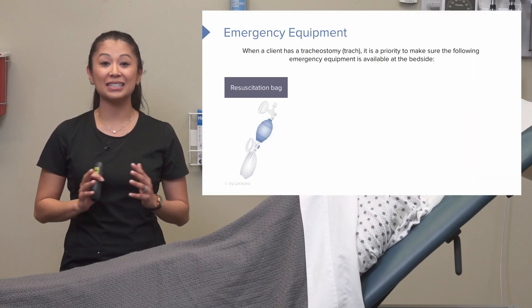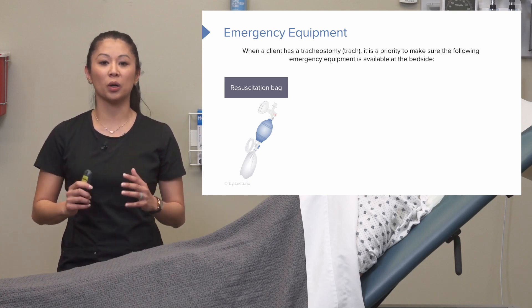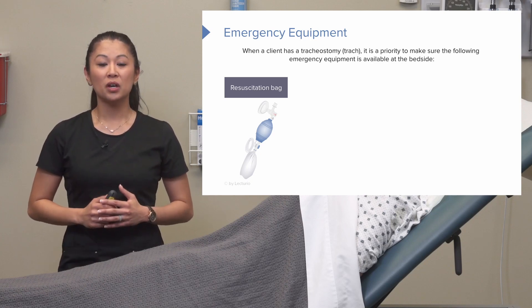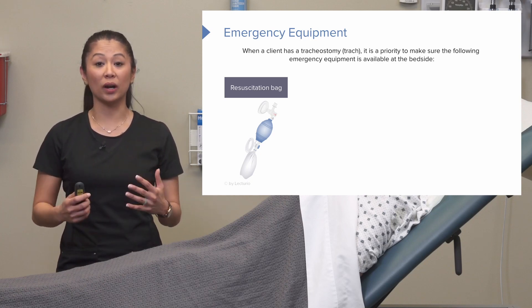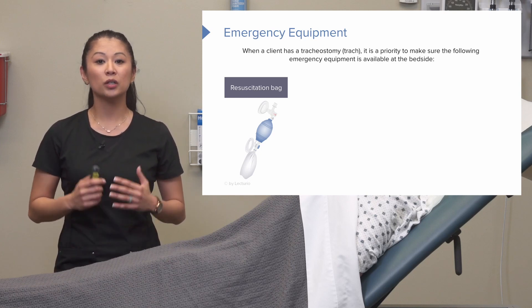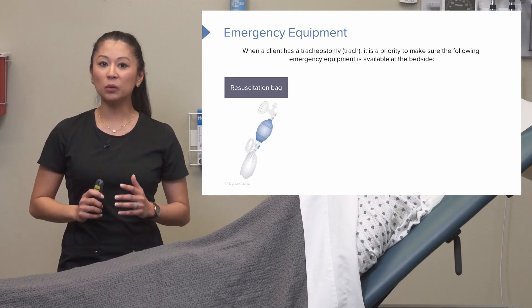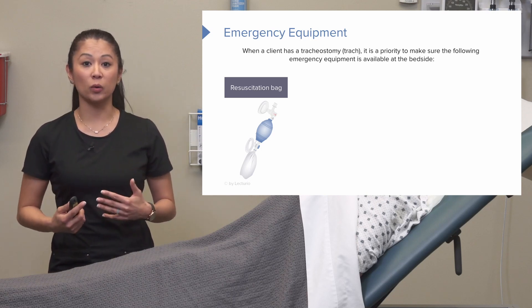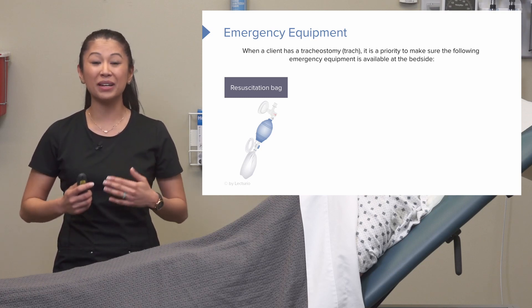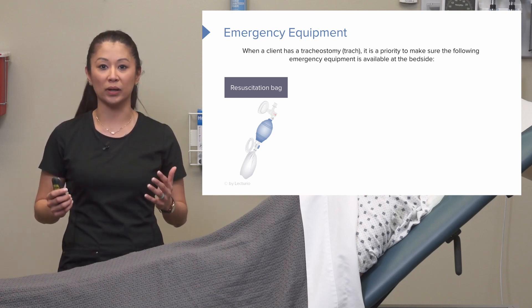Take a look at this slide. Remember back to our basics — ABCs, airway first. This is important to protect our airway, and this is some of the equipment we need to have readily available. You definitely want to know where this is on your unit. The main reason we'll need some of this equipment is because the patient may dislodge their trach.